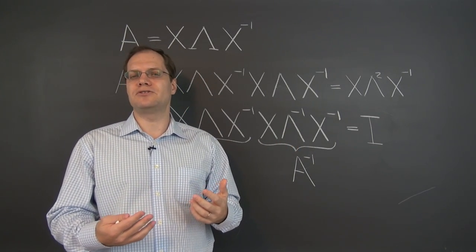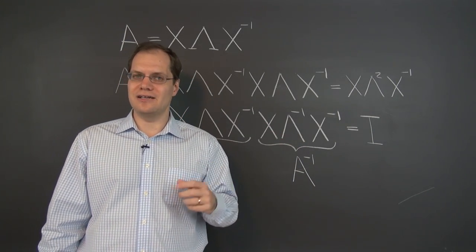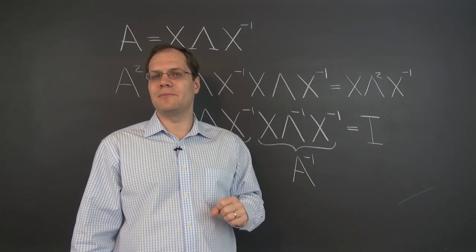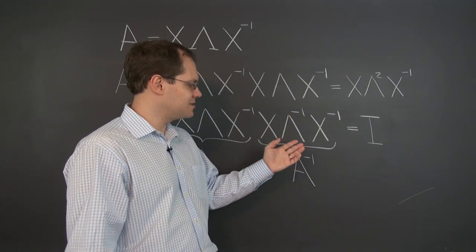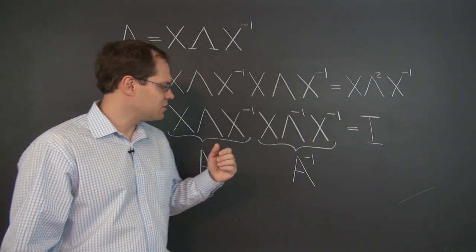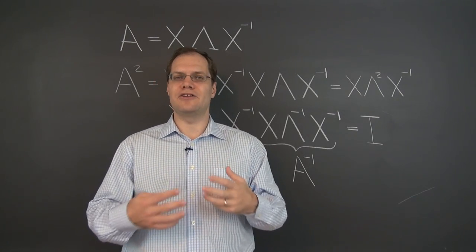Of course, this diagonal matrix is easy to invert. How do you invert a diagonal matrix? Well, assuming all of the entries on the diagonal are not zero, otherwise the matrix wouldn't even have an inverse, you just replace every number with a reciprocal. Just as easy as raising it to any other power. So there you go. Now we have an expression for inverse and any integer power.